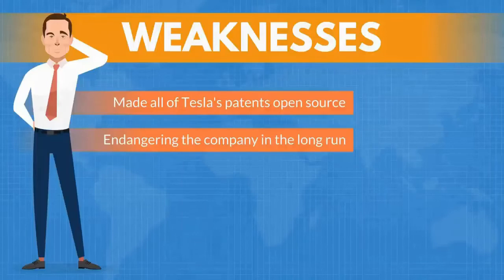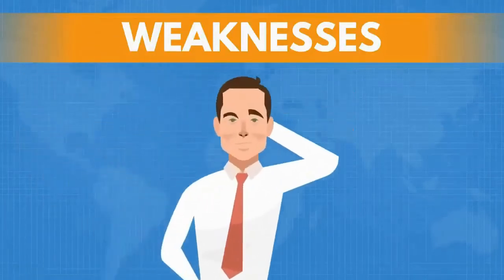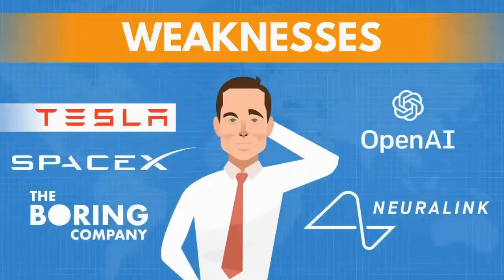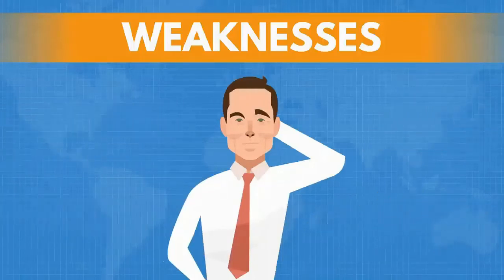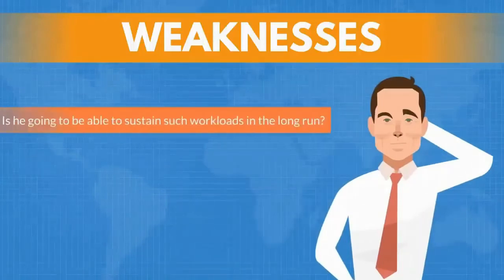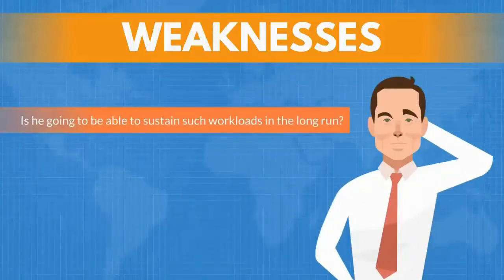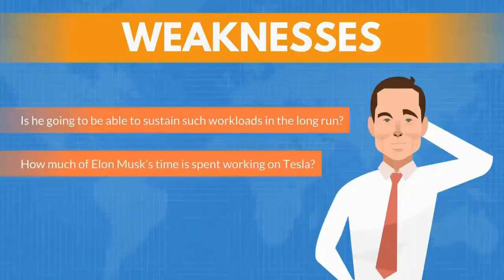The last weakness we will add here is Elon Musk's divided attention. The fact that Tesla has a CEO who is responsible for four separate billion-dollar entities is a bit disturbing. First, is he going to be able to sustain such workloads in the long run? And second, how much of Elon Musk's time is actually spent working on Tesla?